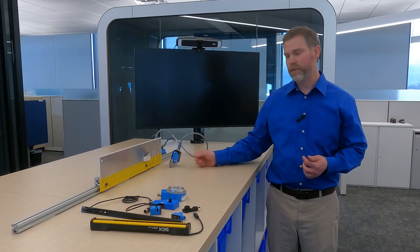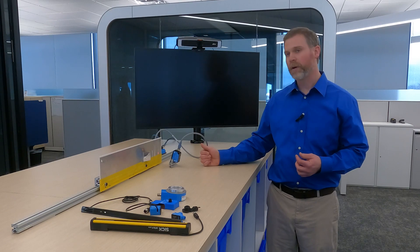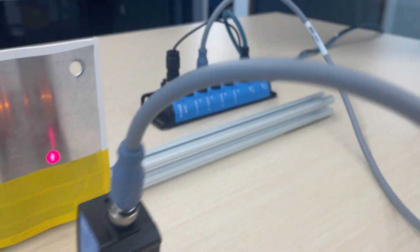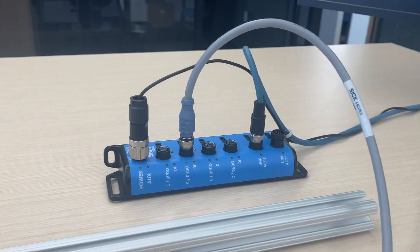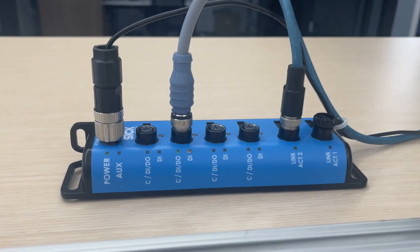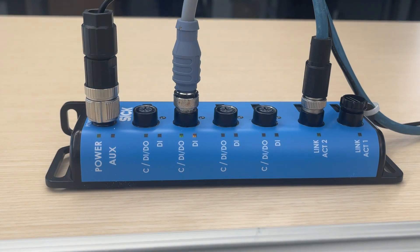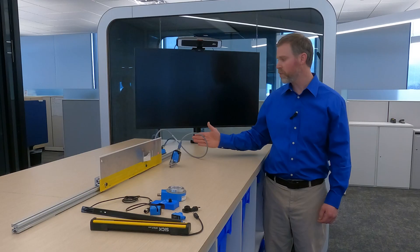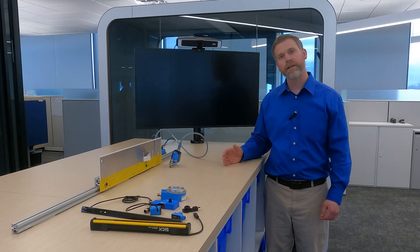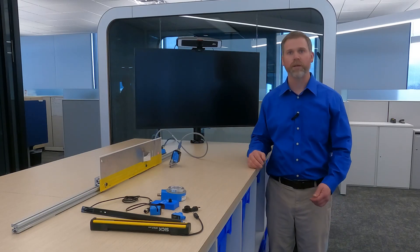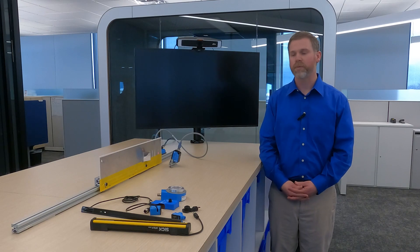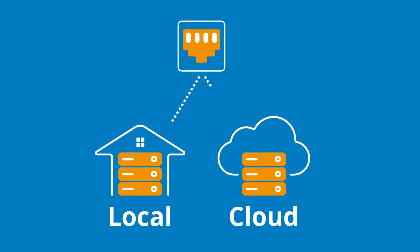The laser time-of-flight sensor takes its information over IO-Link and passes it to the second piece of the system, which is the sensor integration gateway — the SIG200. That takes the information in over IO-Link and passes it to Ethernet, so once the data is on Ethernet you can manage it locally or on the cloud.